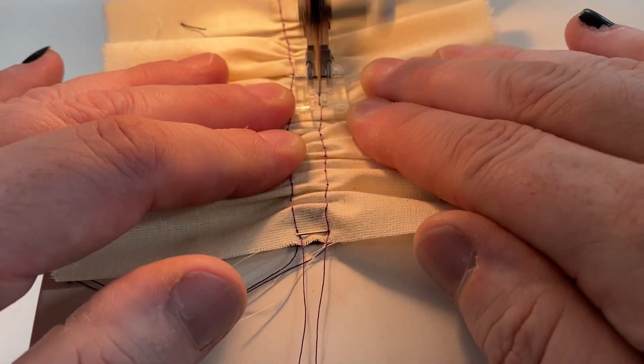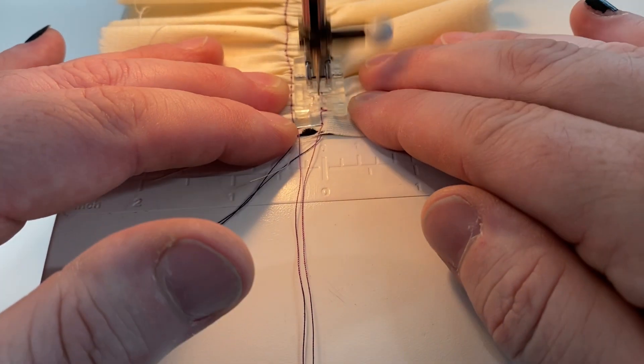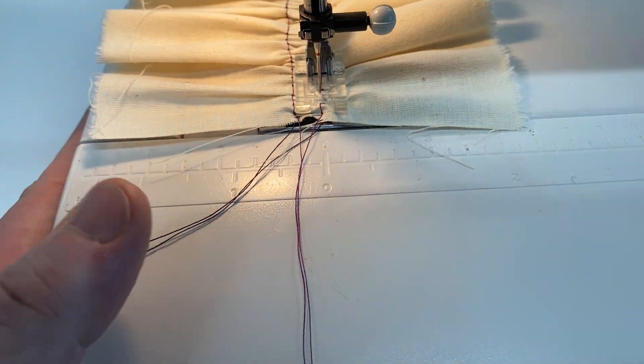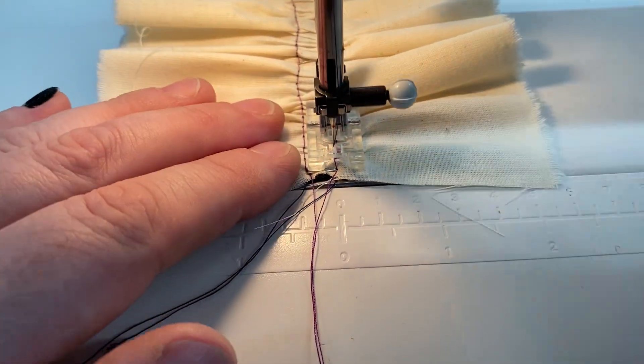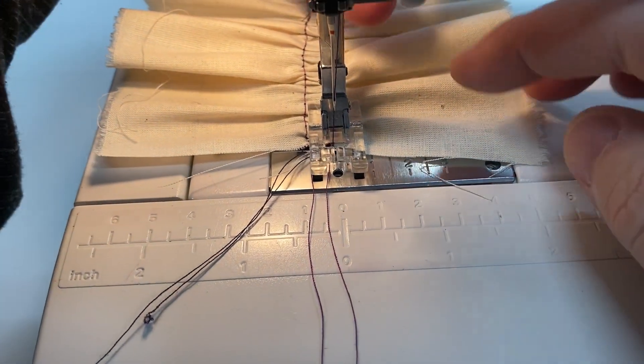You're going to kind of want to control the gathers in place with your hands too. You're going to want to try to fold them out of your way. I use both of my hands on either side trying to make it sit a little better. And back stitch at the end. And don't forget to do the other side.